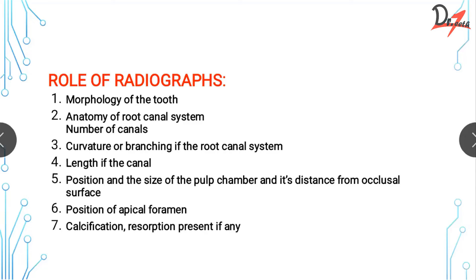The position and size of the pulp chamber and its distance from the occlusal surface is critical. In my very first root canal on a 36 tooth, I ended up doing a perforation and the tooth failed because I did not analyze the radiograph and just kept searching for canals. You need to assess how far you are from the furcation, take intra-appointment radiographs, and verify yourself. Also assess the position of the apical foramen and check for any calcification or resorption, which can cause perforation if overlooked.